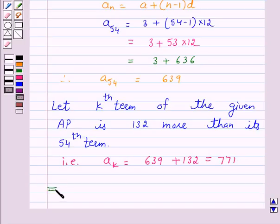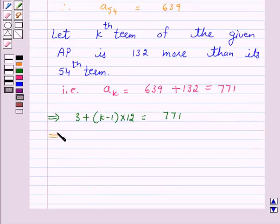This implies A, which is 3, plus (K minus 1) into D, that is 12, equals 771. This implies 12 into (K minus 1) equals 771 minus 3.